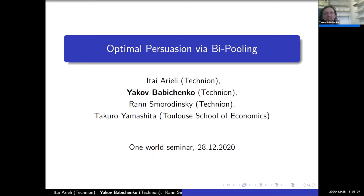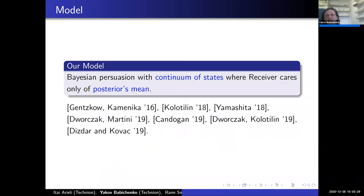Thank you for the introduction and for inviting me to give this talk. The talk is about optimal persuasion via B-pooling. This is joint work with Itay Ariely and Vance Morodinsky, my colleagues at the Technion, and with Takuro Yamashita from Toulouse. Let me jump directly to the model we will study today: essentially a Bayesian persuasion model with continuum states where the receiver cares only about posterior means.